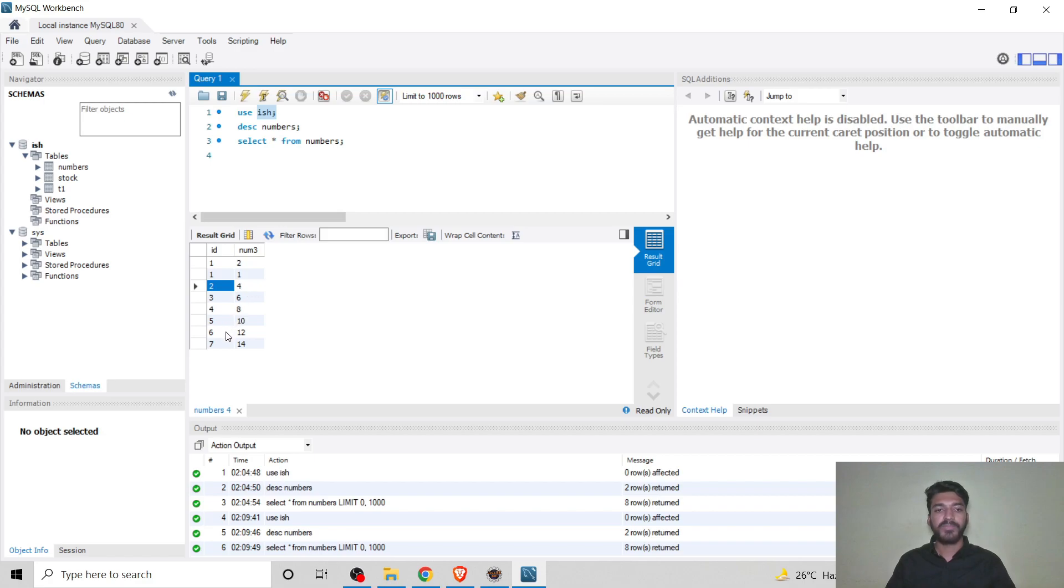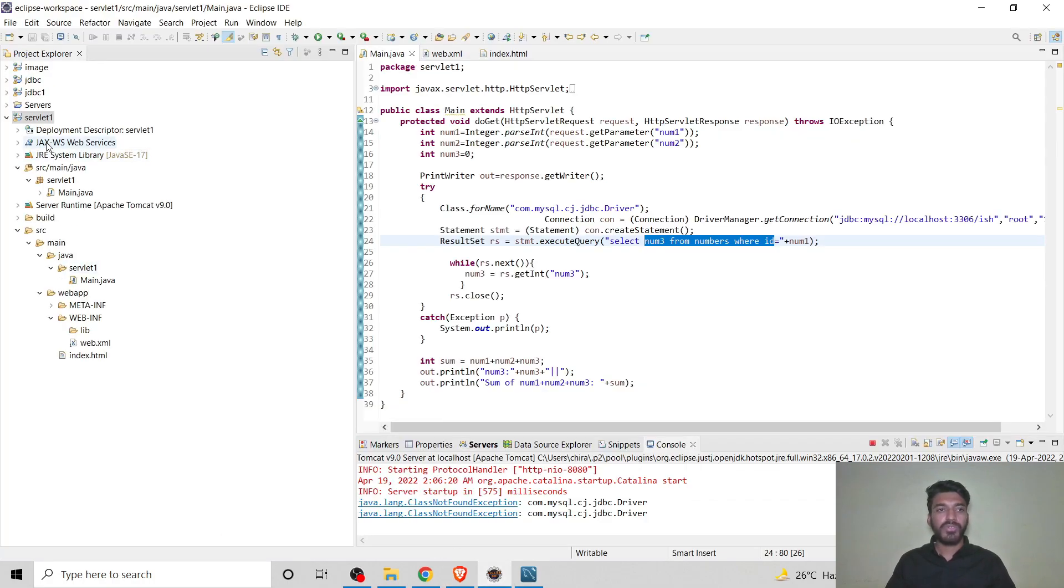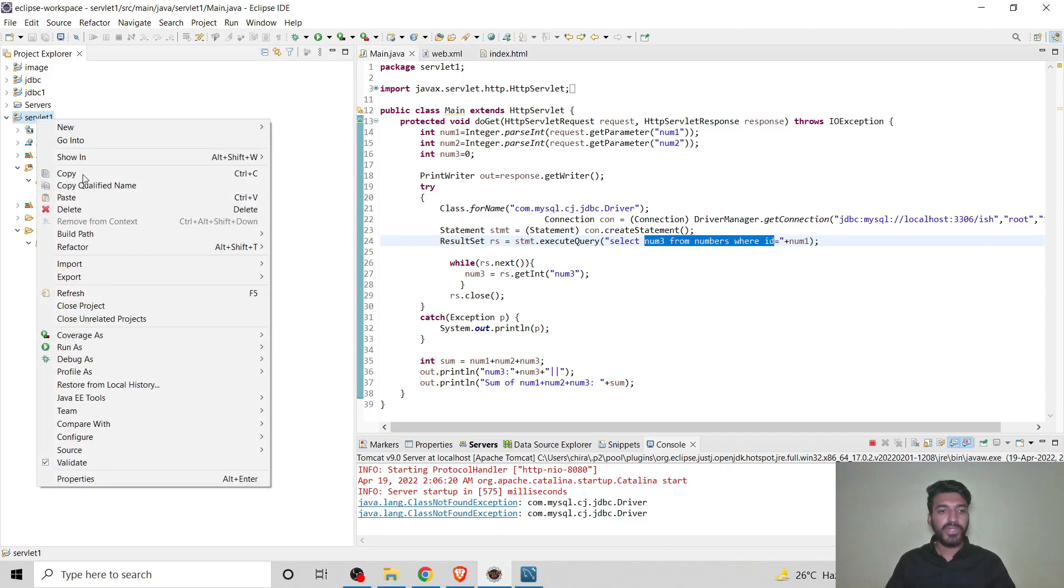If the user entered 6, the id for num3 will be 6 and num3 will be 12. We can execute this code.